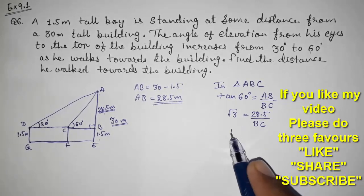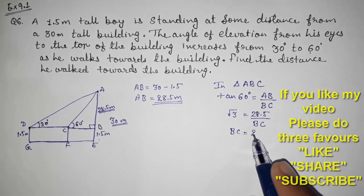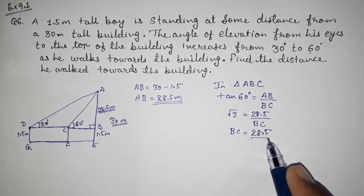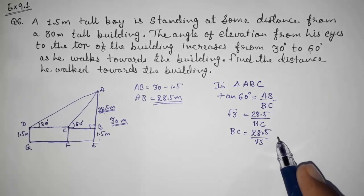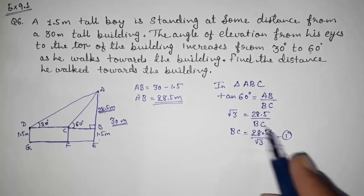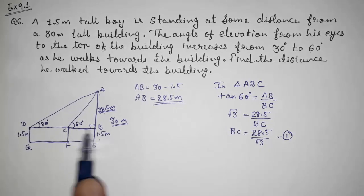Now what will happen? BC will be equals to 28.5 by root 3. So take it as result number 1. You can rationalize here also. We have found out this.